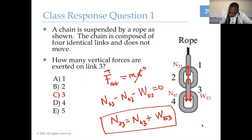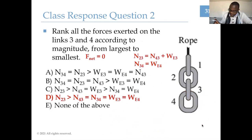If there are external forces doing work on a system, it would change the energy of that system. But if there are no external forces, the mechanical energy would not change — it could switch between kinetic and potential energy, but the total energy of the system would remain constant. Let's see if we can apply this idea of work on a particle.